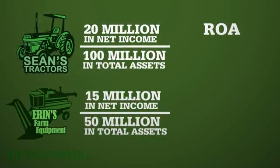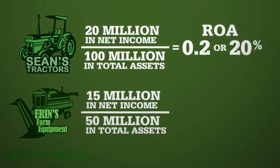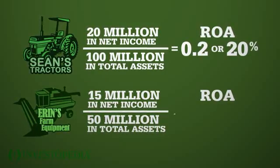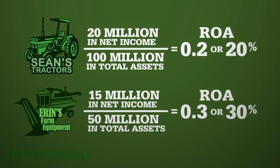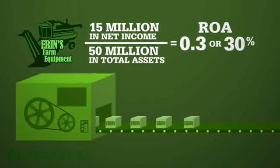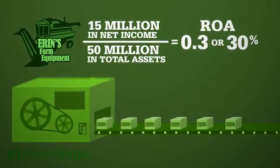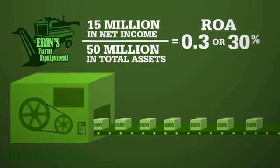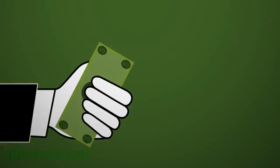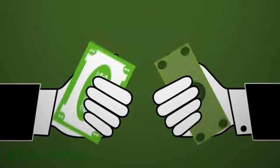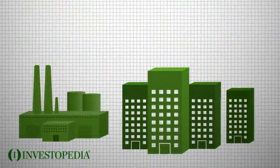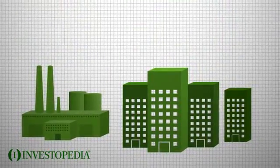Sean's ROA is 0.2, or 20%. Aaron's ROA is 30%. This suggests that Aaron's company is better at converting its investments into profit, even though it is a smaller company. Andy decides to buy shares of Aaron's Farm Equipment.